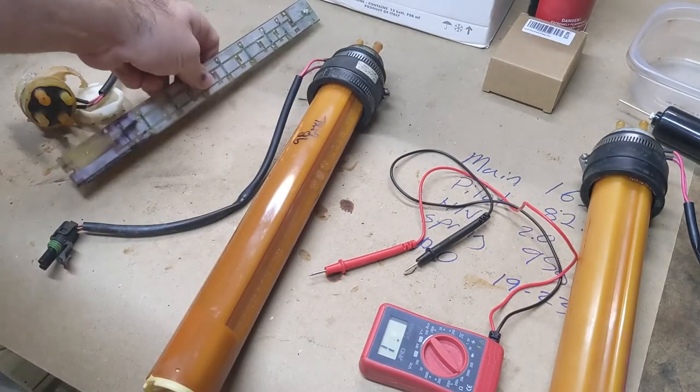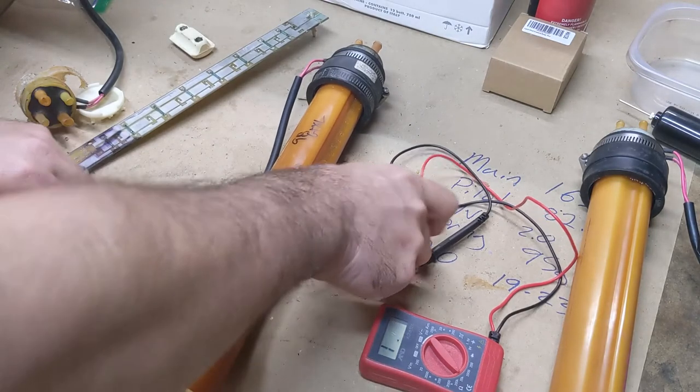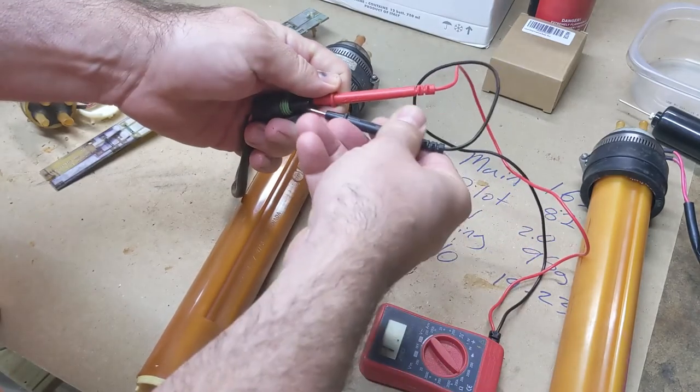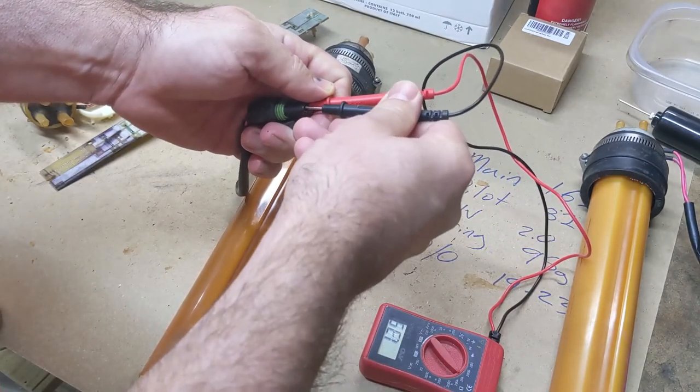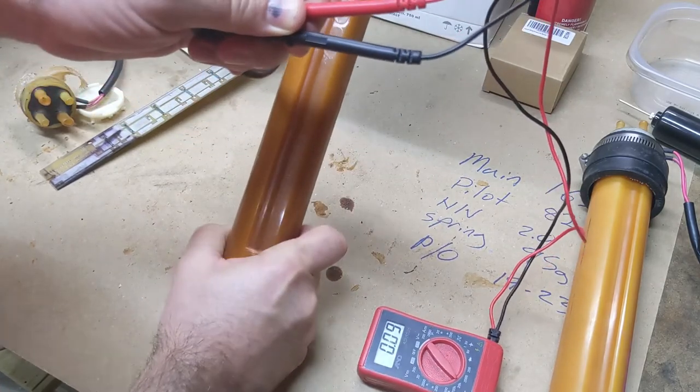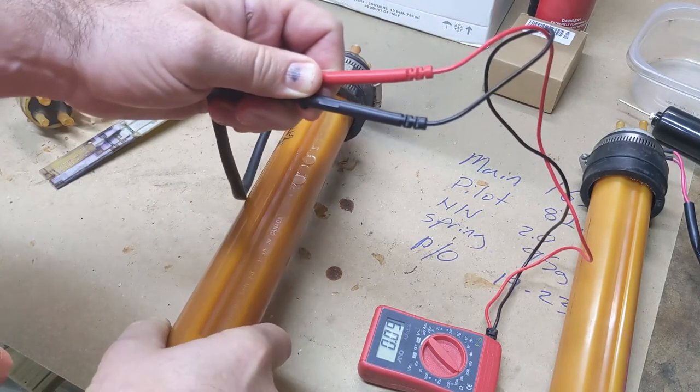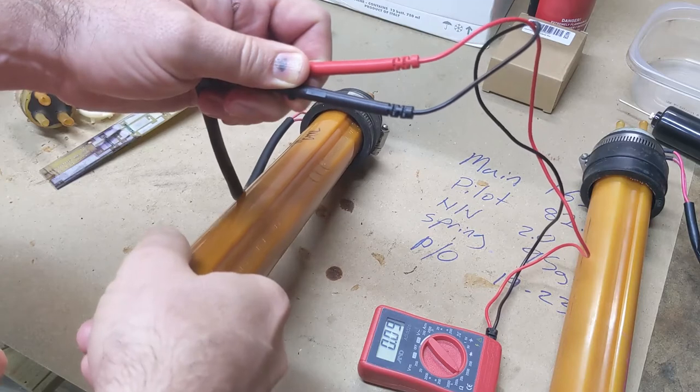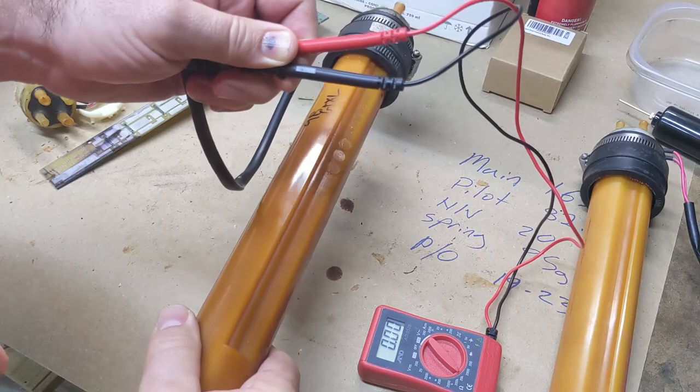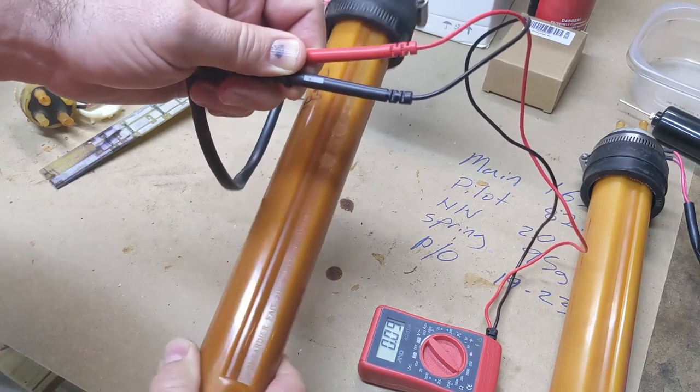To know if they work, we're actually going to do this here. I've got an ohmmeter set, and you basically connect your leads like this. I'm going to tilt it where the float's all the way at the bottom, and it's reading 0.09. If I let it slide a little bit, it slid all the way to the end, and it's zero.